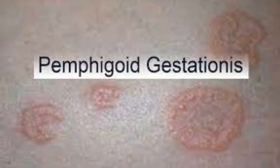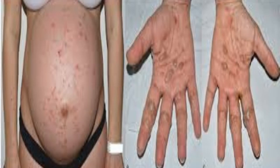The dermis shows a mixed infiltrate including neutrophils and eosinophils. There is usually formation of subepidermal vesicles and bullae, which sometimes may appear to be located intraepidermally due to the orientation of the tissue. The bullae contain eosinophils, lymphocytes, and histiocytes.